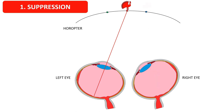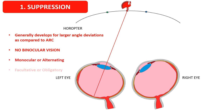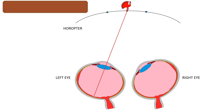Suppression means the active inhibition by the visual cortex of the image formed from the deviating eye when both eyes are open. This is the simplest, commonest, and most effective form of sensory adaptation — the brain just switches off the image from one eye completely, so only one eye is viewing and diplopia will not be there. This generally develops for larger angle deviations compared to abnormal retinal correspondence. The biggest drawback of suppression as an adaptation is that binocular vision is completely lost, although it is still better than having diplopia.